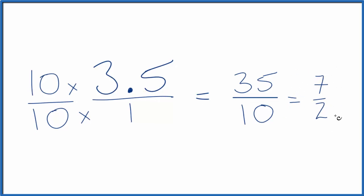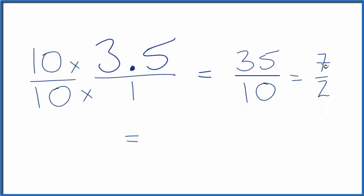Let's write this as a mixed fraction, though. 2 goes into 7 three times with one left over. So 3 and 1 half. You want to check that. 3 times 2 is 6 plus 1. That gives us 7 over 2, which is the fraction we had up here.